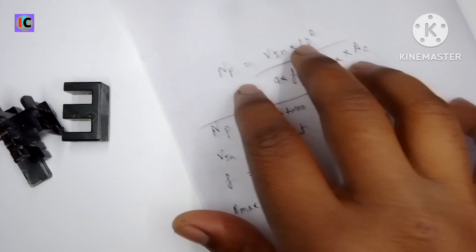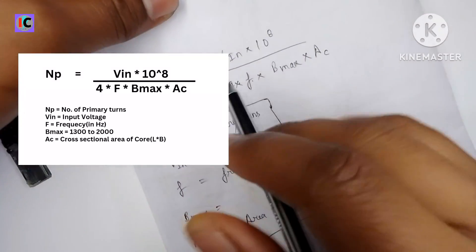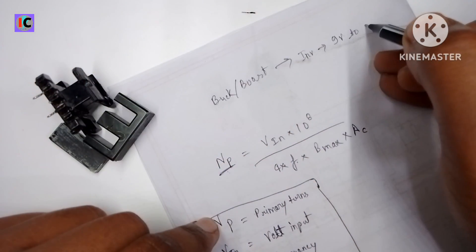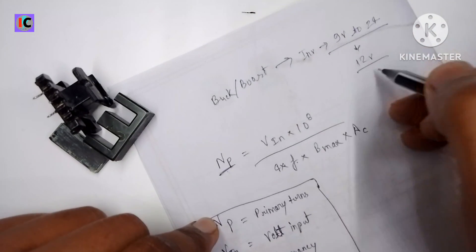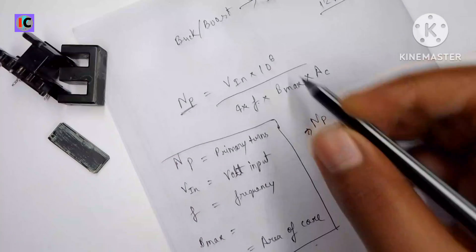So here we have to make some calculations on this transformer so that we can properly make a winding of this. Here we have a formula, and in the primary side we are using 12 volts as an input to boost or lower the voltage of this converter or for the making of inverters.